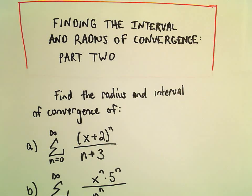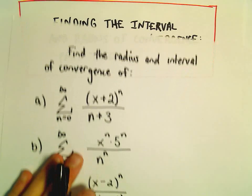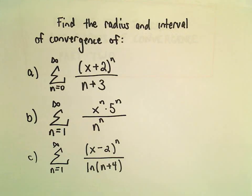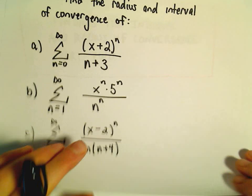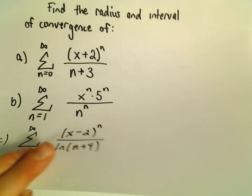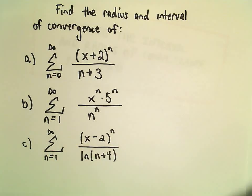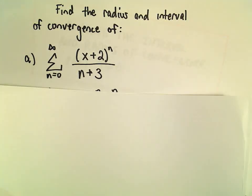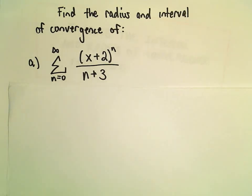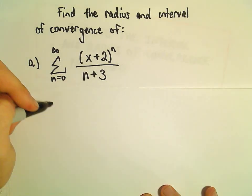In this video we're going to look at some more examples of finding the radius and interval of convergence of a series. In part A, we're going to look at the series from 0 to infinity of x plus 2 raised to the n, divided by n plus 3.